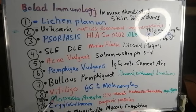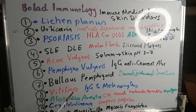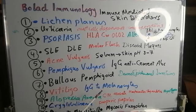Another example of an immune-mediated skin disorder is vitiligo. Patients with vitiligo may lose the color of the skin in some areas, and it is due to antibodies against melanocytes.